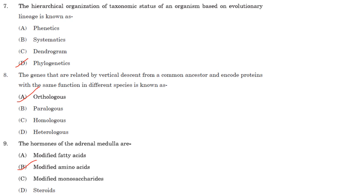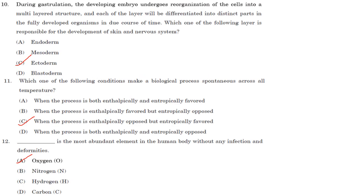The hormones of the adrenal medulla are modified amino acids. An example is epinephrine, which is a hormone from the adrenal medulla and is a modified amino acid.